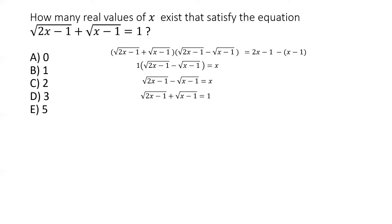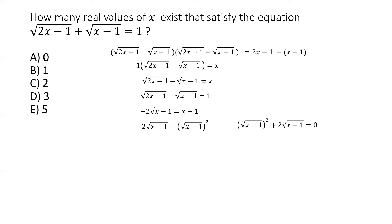We eliminate √(2x−1) by subtracting the two equations. When we do that, we are left with −2√(x−1) = x − 1. The right-hand side x − 1 can be written as (√(x−1))². Rearranging gives us: (√(x−1))² + 2√(x−1) = 0.